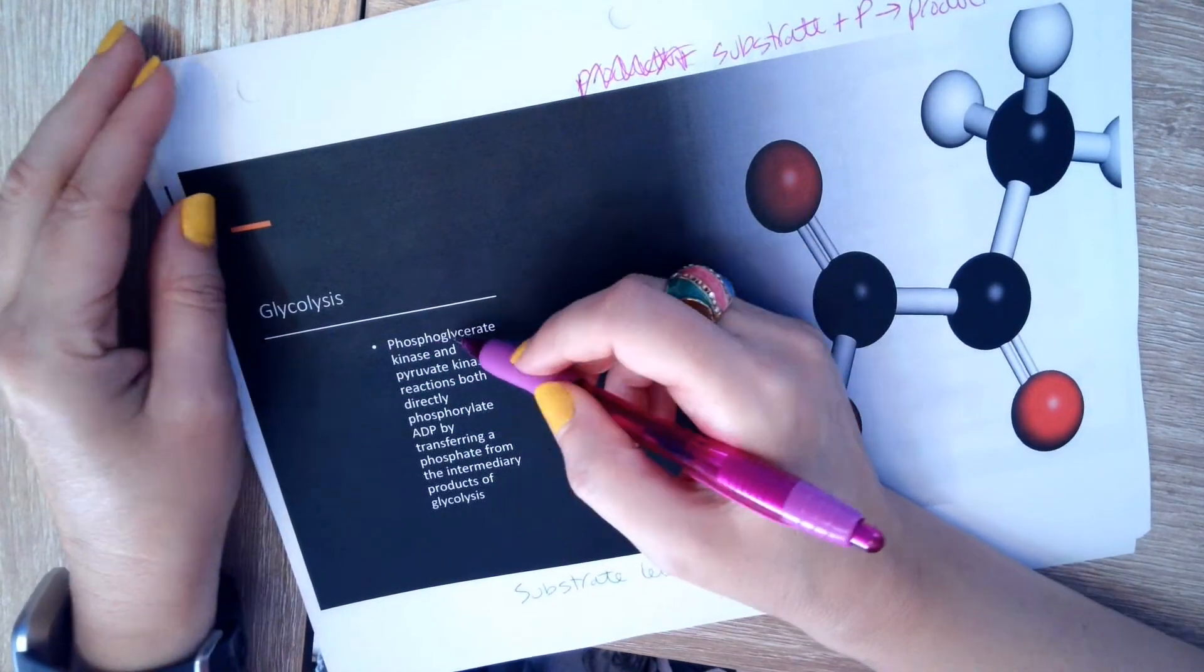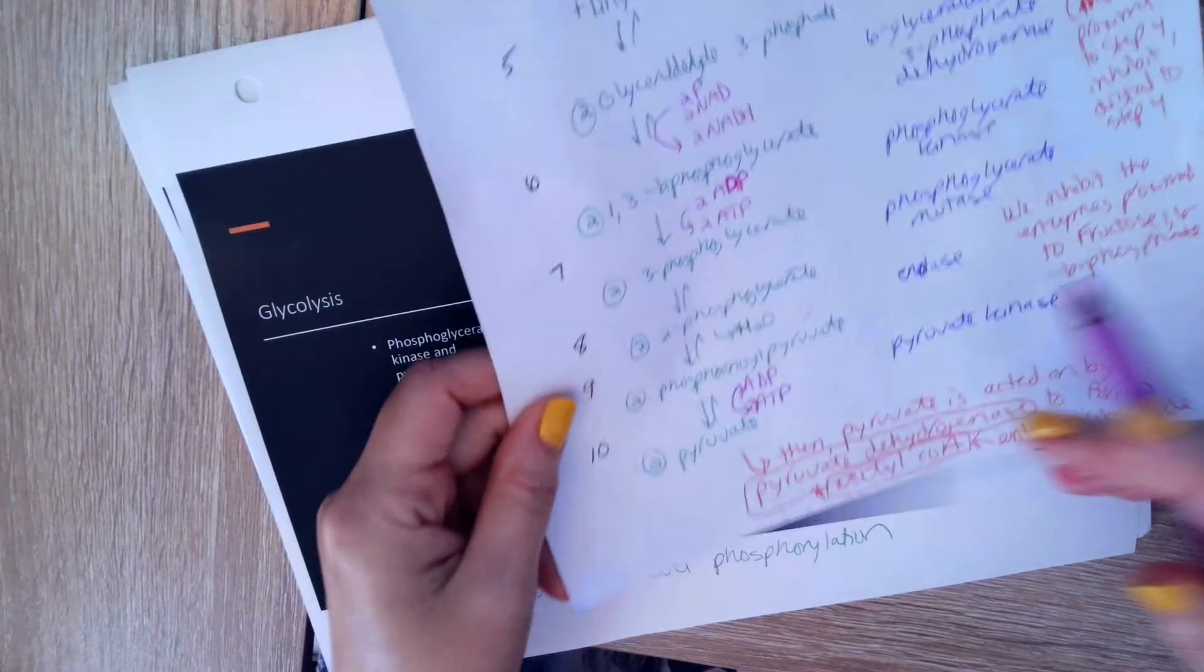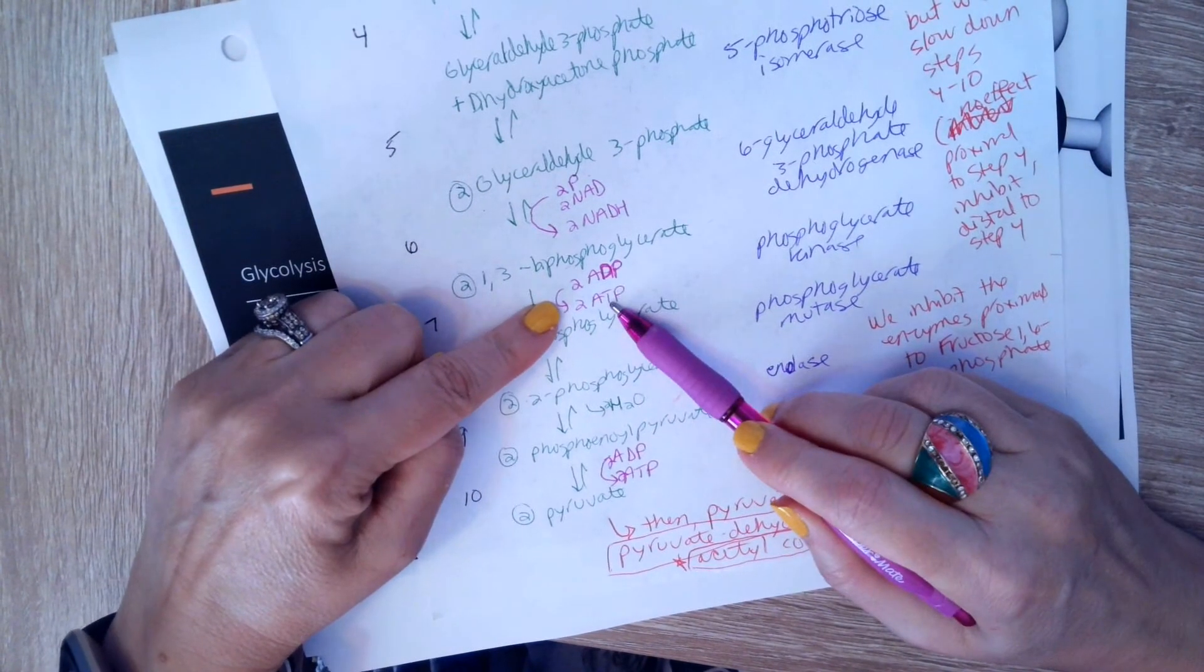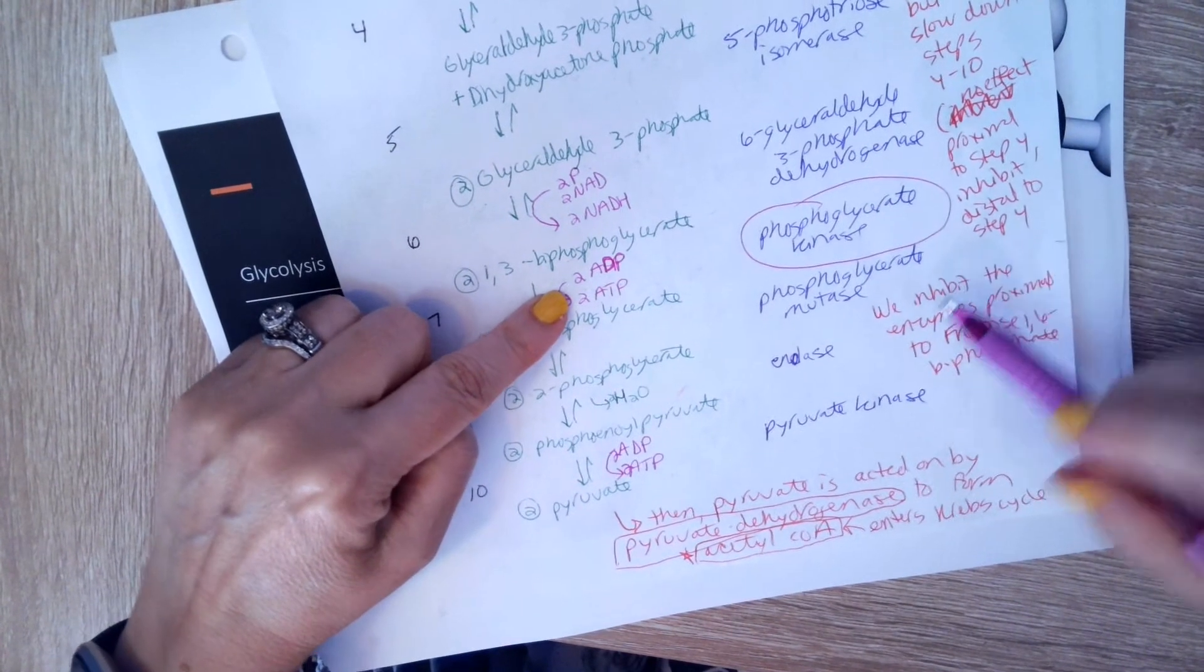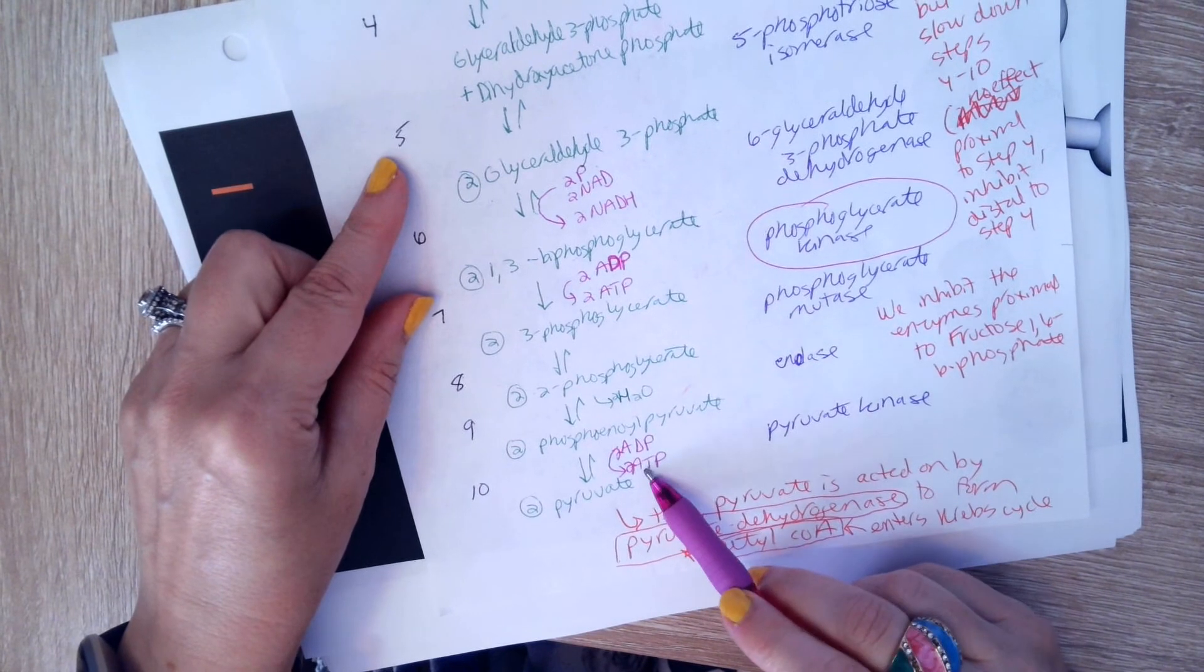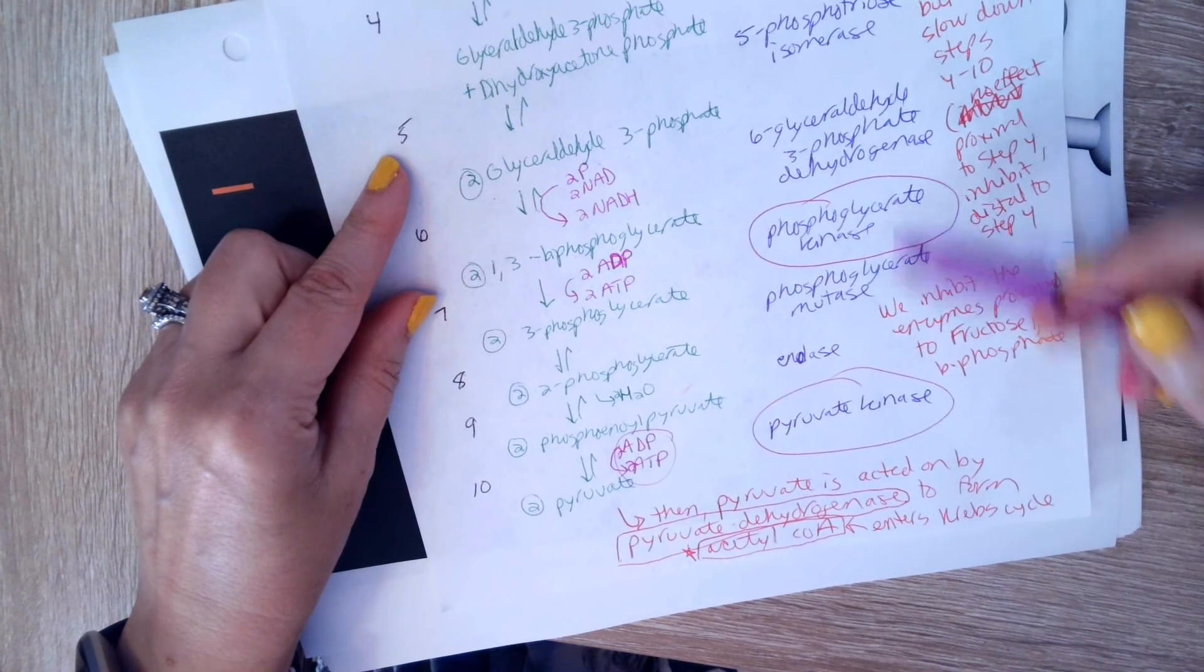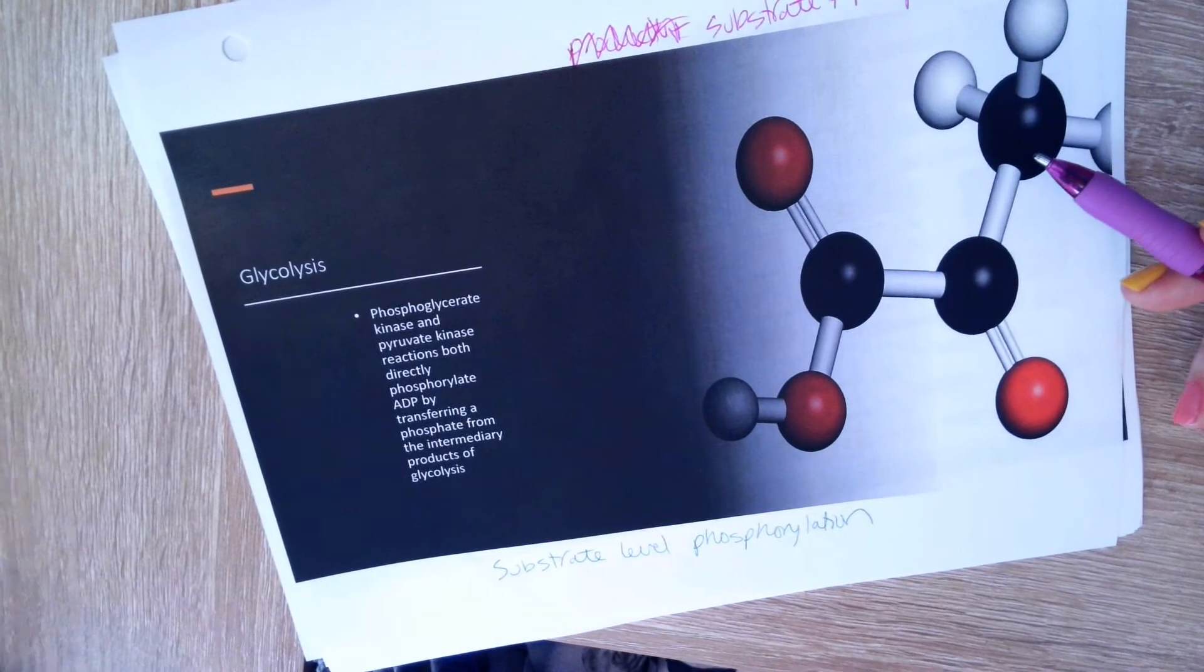So here I've listed the enzymes that do substrate-level phosphorylation, and we can just look at them on our little chart here. Here ADP turning into ATP, this is the enzyme that does that: phosphoglycerate kinase. Down here, step nine, again ADP being phosphorylated into ATP. Here is the enzyme that does that: pyruvate kinase. So these two enzymes are doing substrate-level phosphorylation.